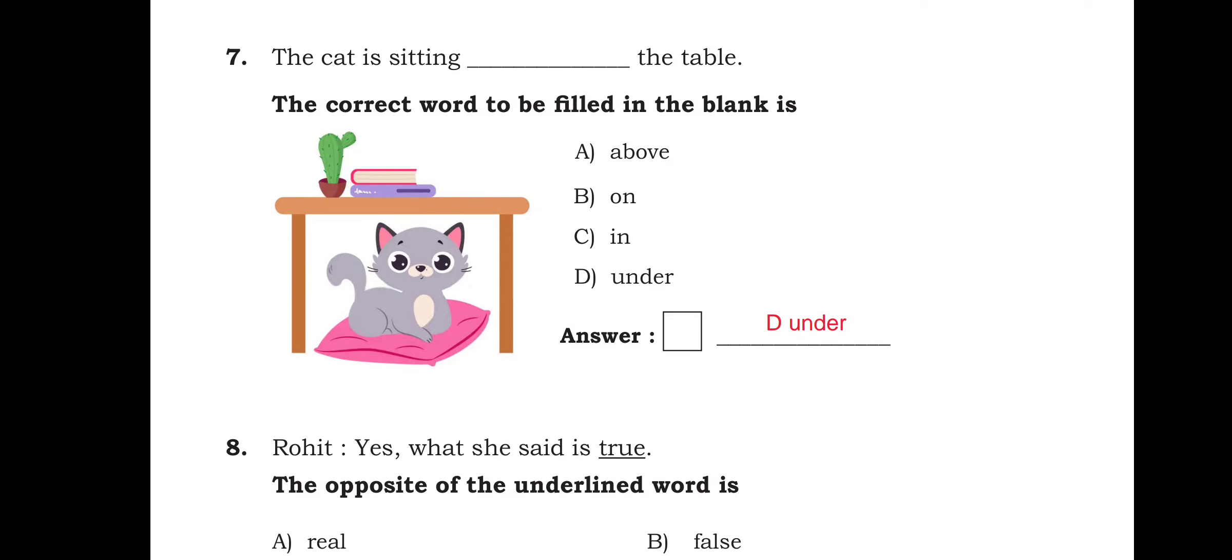The cat is sitting, dash, the table. The correct word to be filled in the blank is under. Option D is the right answer.